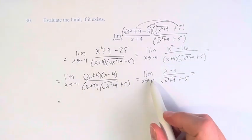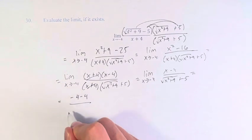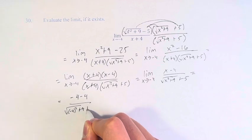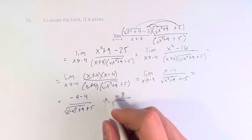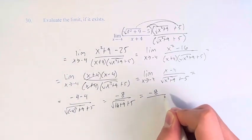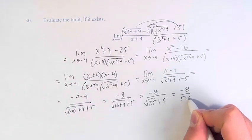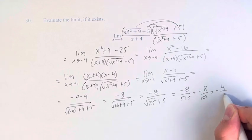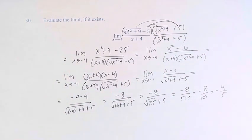Now we can plug in negative 4 without dividing by 0. We get negative 4 minus 4 over the square root of negative 4 squared plus 9 plus 5. That gives us negative 8 over the square root of 16 plus 9 plus 5, which is negative 8 over the square root of 25 plus 5, so negative 8 over 5 plus 5, which is negative 8 over 10, or negative 4 over 5. Therefore, the value of this limit is negative 4 fifths.